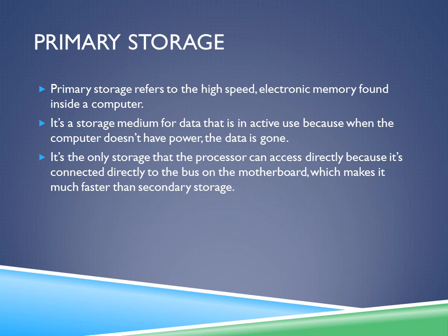Primary storage refers to the high-speed electronic memory found inside a computer. It's a storage medium for data that is in active use, because when the computer doesn't have power, the data is gone. It's the only storage that the processor can access directly because it's connected directly to the bus on the motherboard, which makes it much faster than secondary storage. Note that although hard disks are inside the computer system unit, they are still secondary storage because they're not directly connected to the processor.